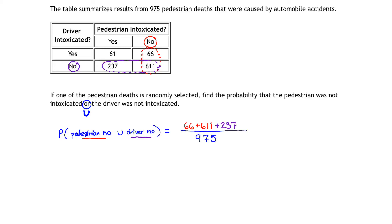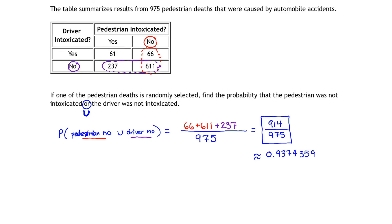So to get the total number in my union, I simply take 66 plus 611 plus 237. If I add that up, I get 914 total elements in that union. When I divide that by 975, that gives me the probability I'm looking for. 914 divided by 975 represents the probability that the pedestrian was not intoxicated or the driver was not intoxicated, which is approximately 0.9374, or about 93.7%.